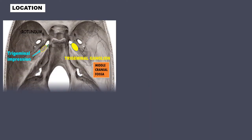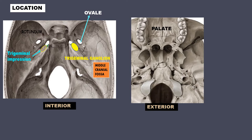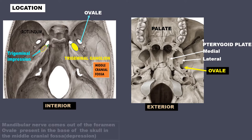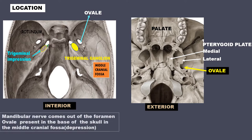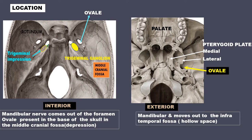This is the interior of the skull base. There are a few foramina here in the middle cranial fossa. The most oval-looking foramen is the foramen ovale. On the exterior of the skull base, we have the palate with teeth in front, and behind are the two pterygoid plates — the medial pterygoid plate and the lateral pterygoid plate. Just below the lateral pterygoid plate is the foramen ovale. The mandibular nerve comes out of the foramen ovale and moves out to the infratemporal fossa, a hollow space lateral to the lateral pterygoid plate.